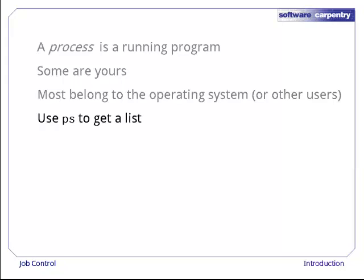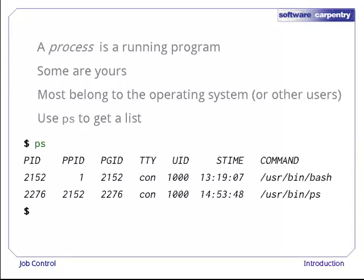You can use the ps command to list them, just as you use ls to list files and directories. Here's some typical ps output. Every process has a unique process ID. Remember, this is a property of the process, not of the program that process is executing. If you are running three instances of your browser at once, each will have its own process ID.